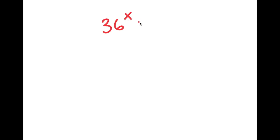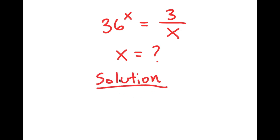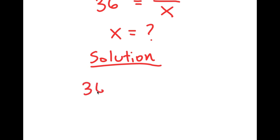In today's video, I'm going to be solving the equation 36 to the power of x is equal to 3 over x. My only variable in this equation is x, so that's what I'm going to be solving for. My equation is 36 to the power of x is equal to 3 over x.